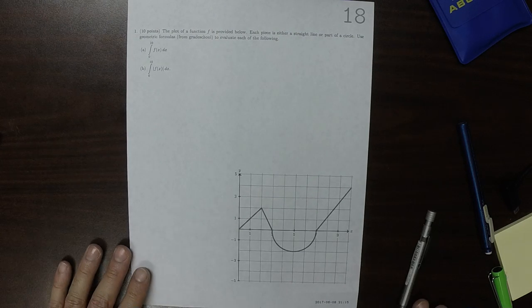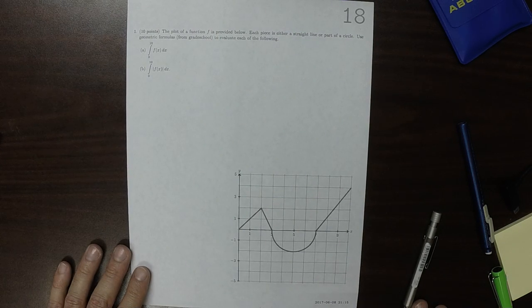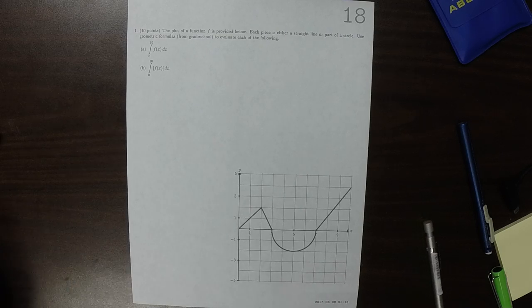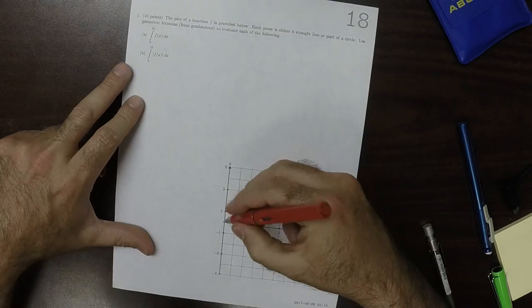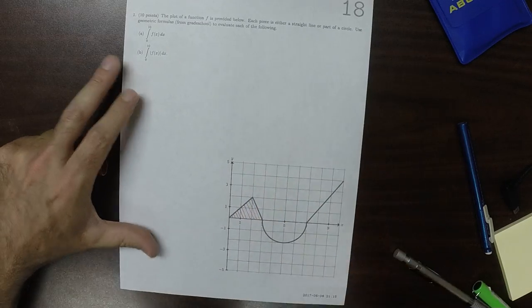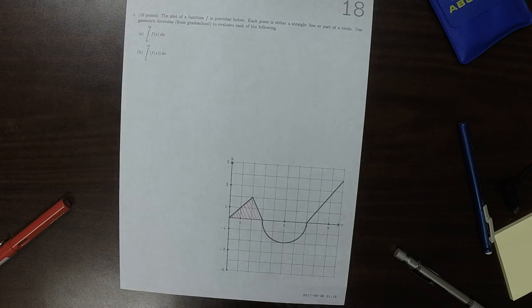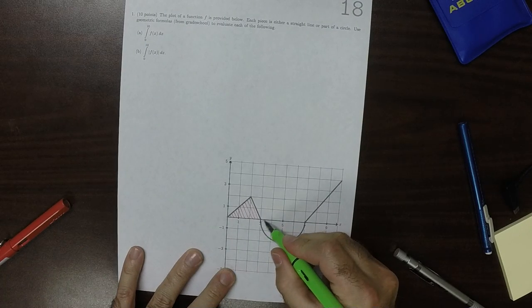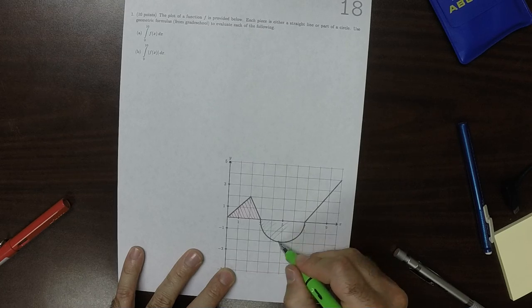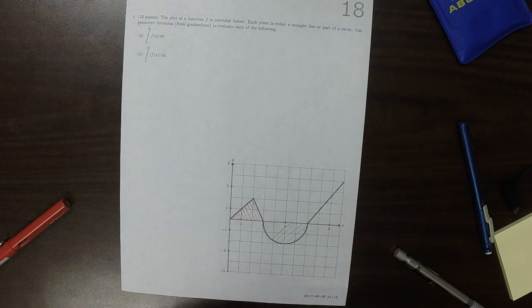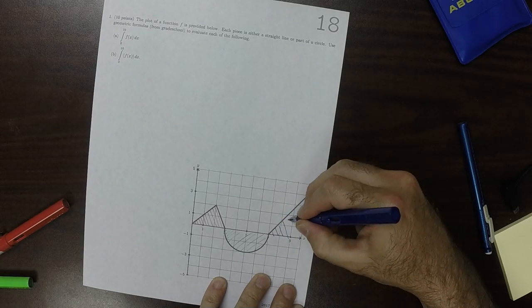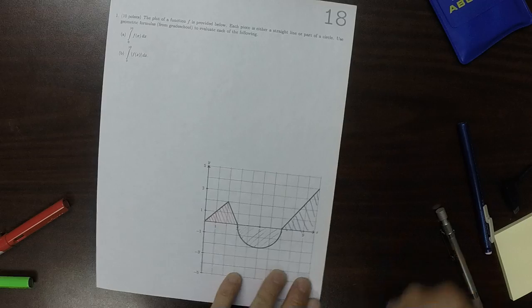This is the solution to written homework 18. There are three different parts here: the red part which is a triangle, this green part which is a semicircle, and this blue part which is another triangle.